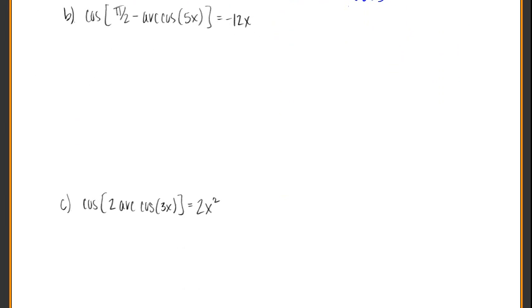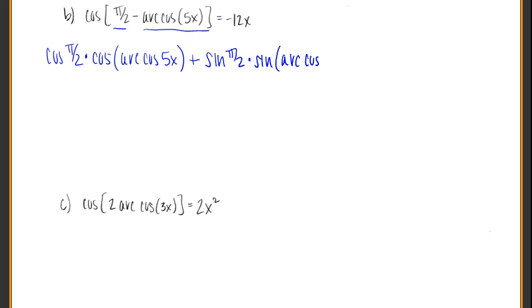So here's, let's move on to b. We have taken the cosine of an angle that has more than one item in it. We have π over 2, and then we also have this whole arc cosine of 5x. So we're going to use the cosine rule for when our angle has more than one thing, which is the cosine of the first times cosine of the second.